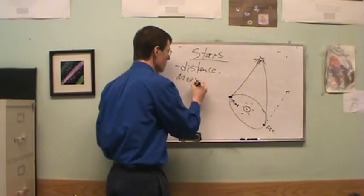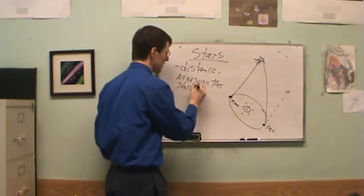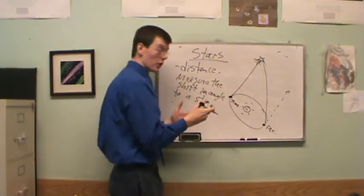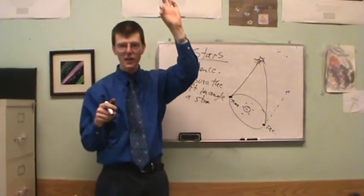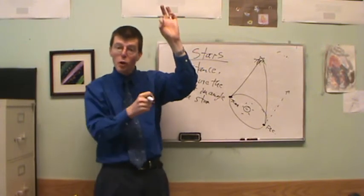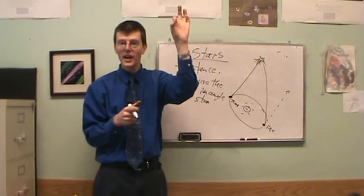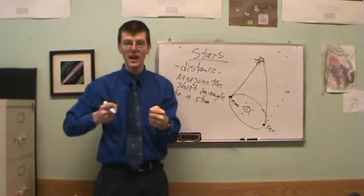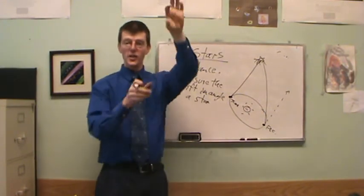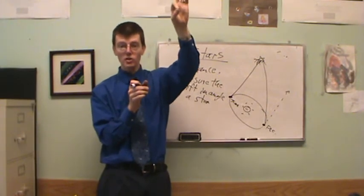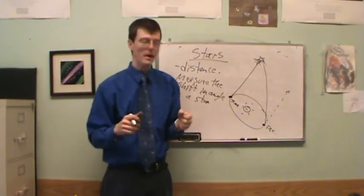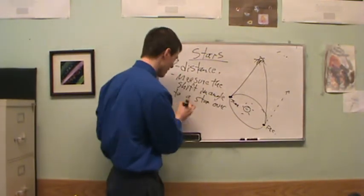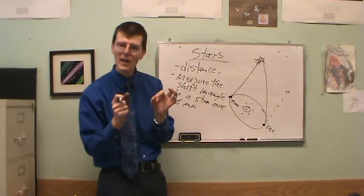I measure the shift in angle to a star over the course of a year — it shifts back and forth. If I look at a relatively nearby star very carefully, as the Earth goes around the sun that star will appear to wobble back and forth in a yearly pattern: six months to the right, six months to the left. It's not the star that's moving — it's the Earth moving around the sun. Since our perspective is changing, that causes the star to shift back and forth. The farther away it is, the less it shifts. This is called the parallax angle of the star.